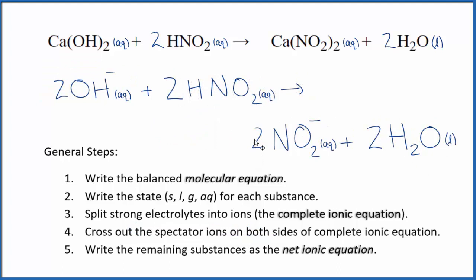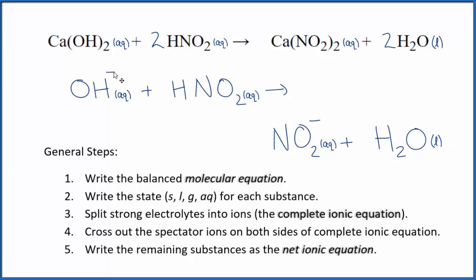So this is the balanced net ionic equation for Ca(OH)2 plus HNO2. Note that we have a 2 in front of everything. So we could just reduce that down to 1. And by convention, we don't write the 1. Note that the charge is conserved. We have a negative here in the reactants and a negative in the products. So charge is the same on both sides. And if you count the atoms up, they're balanced too.